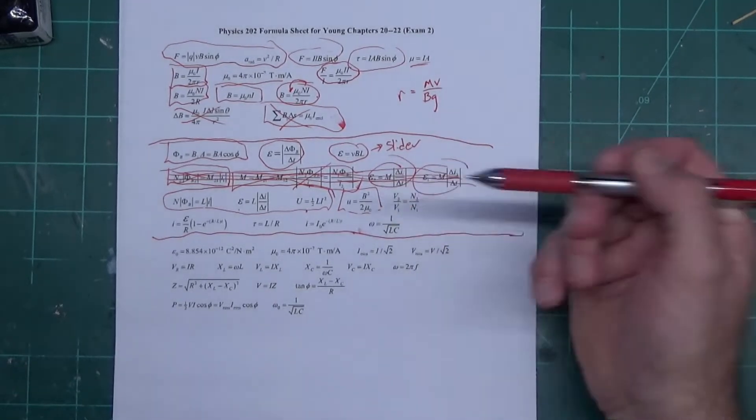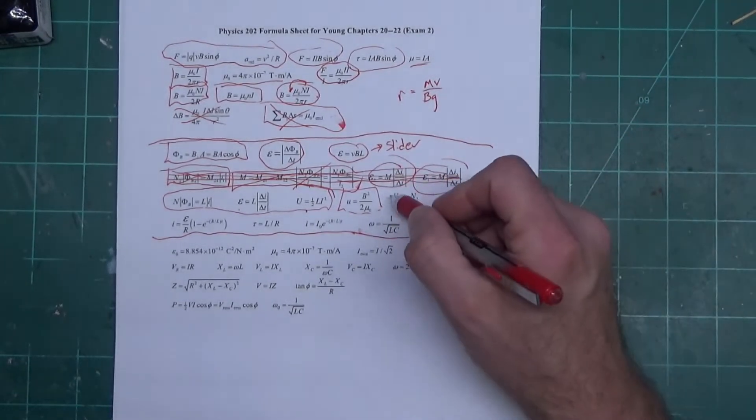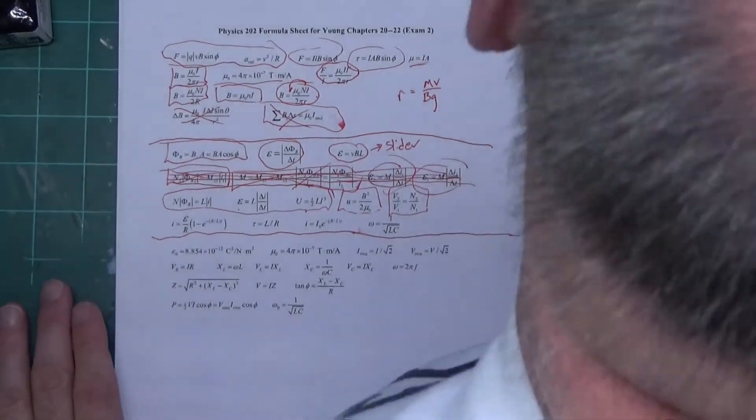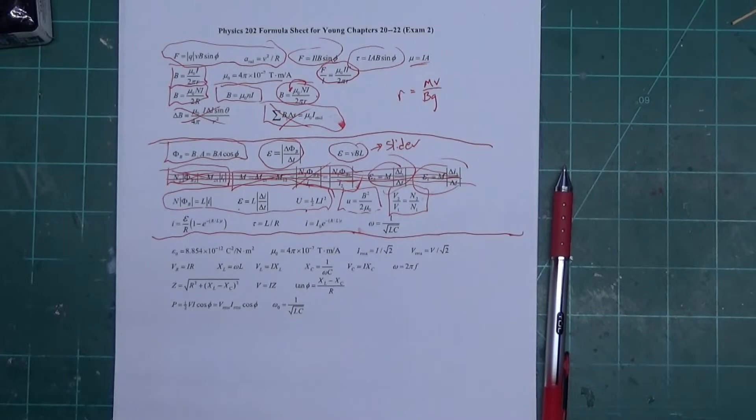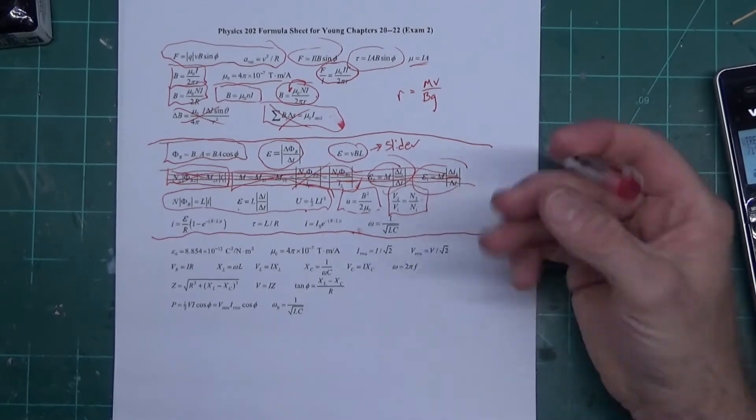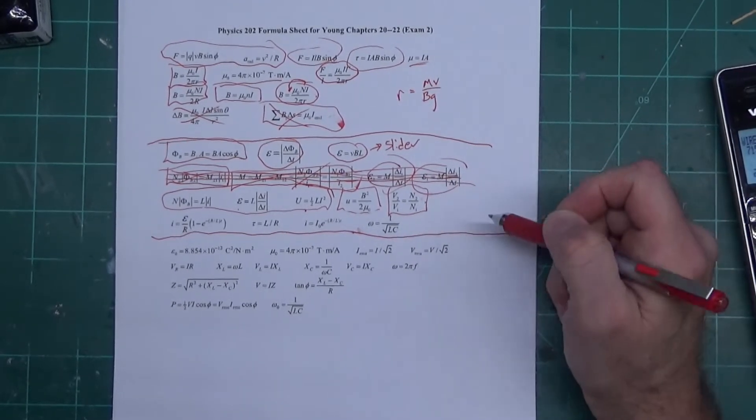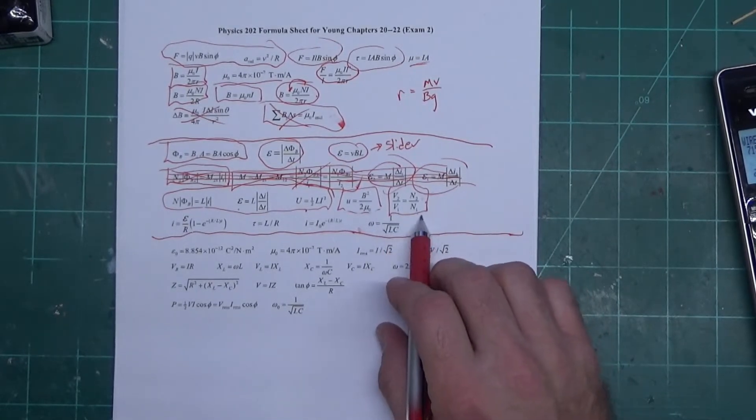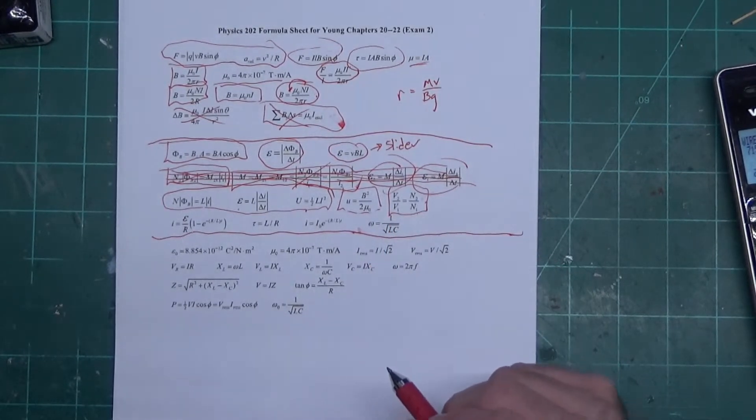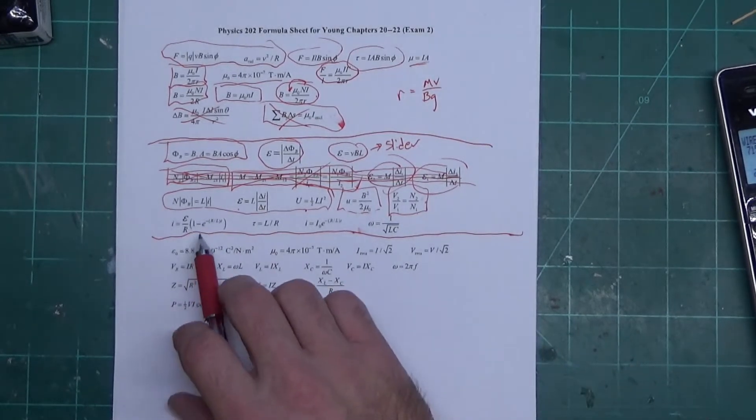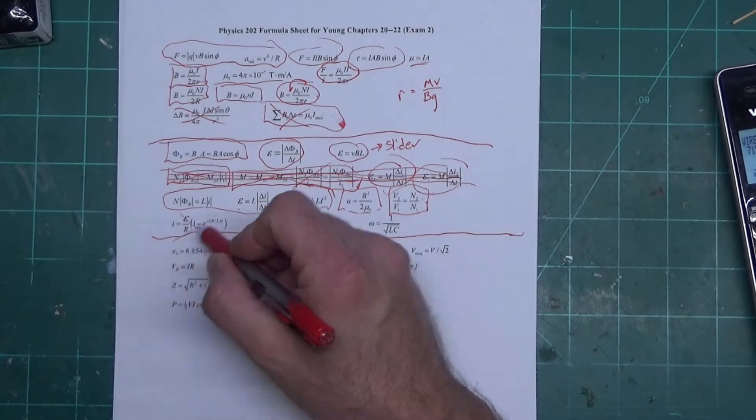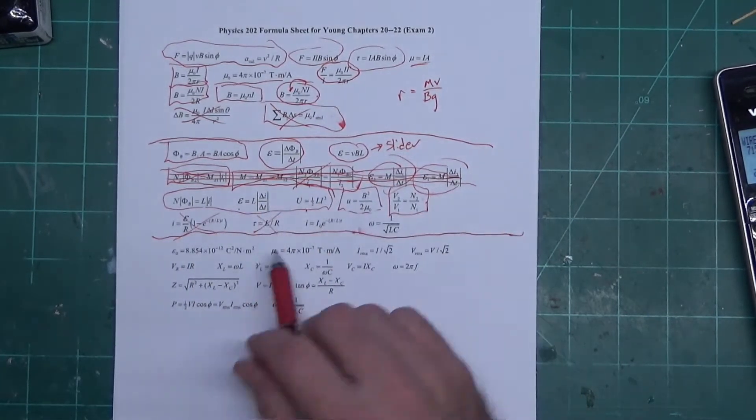This right here is - sorry, my phone is ringing - this right here is for a transformer. You have the primary side and the secondary side. The ones are primary, the twos are secondary. Down here we have an equation that he does not use.